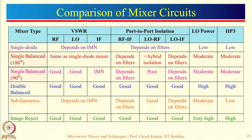LO power is required to drive the mixing devices. Low or moderate LO powers are required for single diode, sub-harmonically pumped, and single balanced mixers because LO power depends on the number of mixing devices used. For example, a single diode mixer uses only one diode, so you require low power. For image reject or double balanced mixers, the LO power requirement is very high because a double balanced mixer contains four diodes, and an image reject mixer contains two doubly balanced mixers.